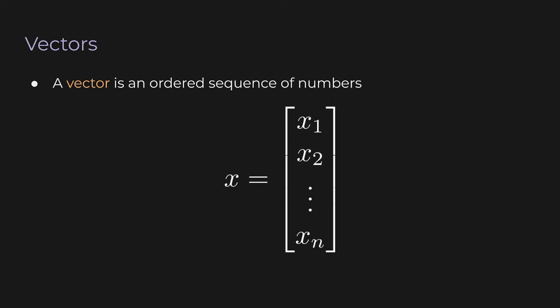Some of you may have seen vectors written as boldface variables, and this comes from physics or other fields, and sometimes even other linear algebra courses. But for this course, and for a lot of the literature out there, vectors are often written just with ordinary italics, just like other variables.